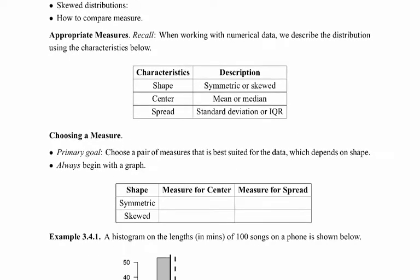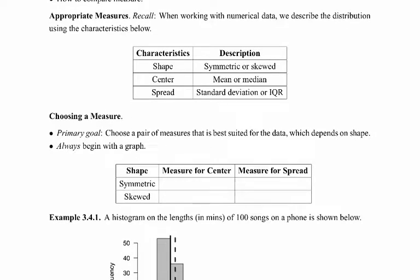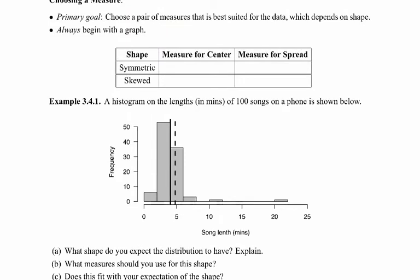Let's take a look at this first chart — it's a refresher of what we've already talked about. When working with numerical data, we always describe it in terms of three main characteristics: the shape of the distribution (symmetric or skewed), the center (mean if symmetric, median if skewed), and the spread (standard deviation if symmetric, IQR if skewed). Your primary goal is to choose a pair of measures best suited for the data, which always depends on the shape.